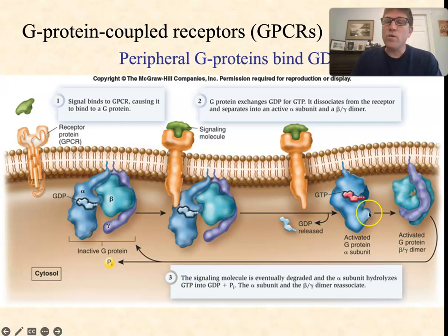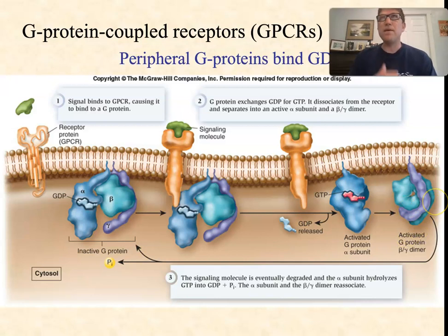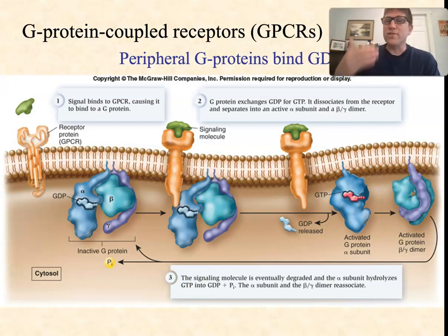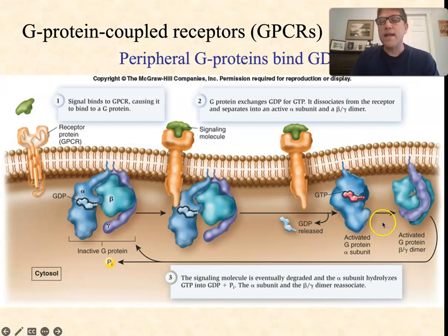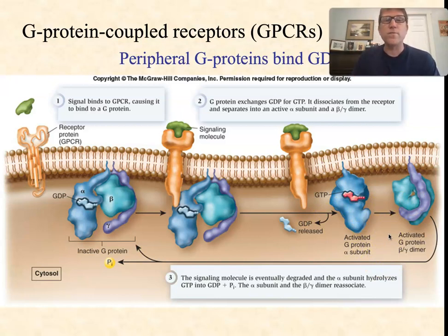Either one or both of these, depending on the GPCR and the system, can be the activated signaling molecule that sends the signal to the interior of the cell. For example, one or the other might be a protein kinase now in an activated state, and it can phosphorylate some soluble protein — just like we saw with enzyme-linked receptors, though there are other ways that G-protein-coupled receptors can work.